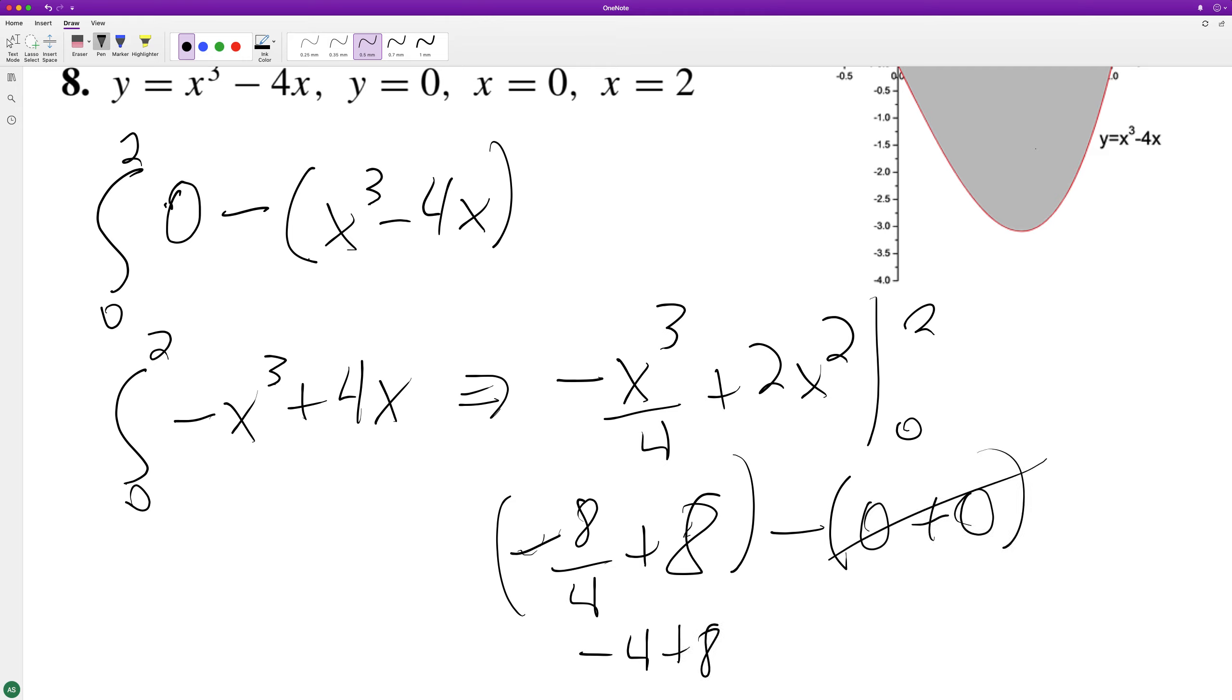All right so that's negative 4 plus 8 and that gives us 4 and that's how much area is in the shaded area.